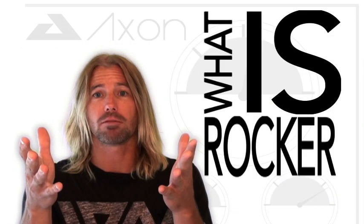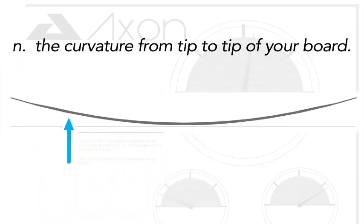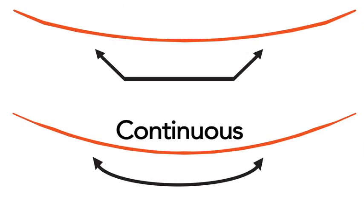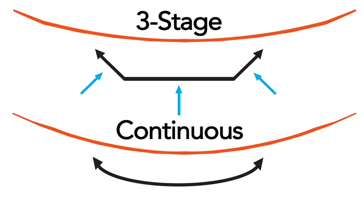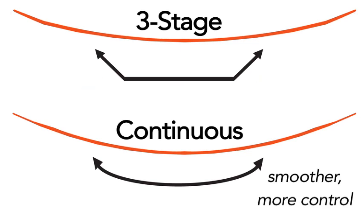Rocker is the curvature from tip to tip, or tip to tail, of your board. The two most common rocker patterns are continuous rocker and three-stage rocker. Continuous rocker is a smooth continuous curve from tip to tip with no strange angle changes. A three-stage rocker usually has a flatter curved section between your feet and an angle change at the tips. Continuous rockers typically give you a smoother ride and more control, while three-stage rockers are typically better for pop off of small waves or kickers.